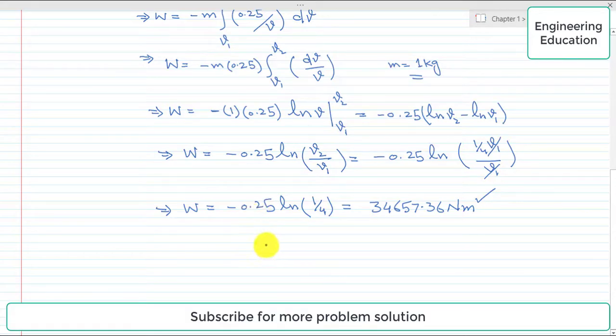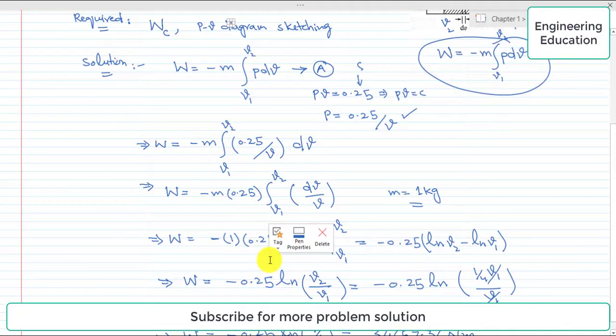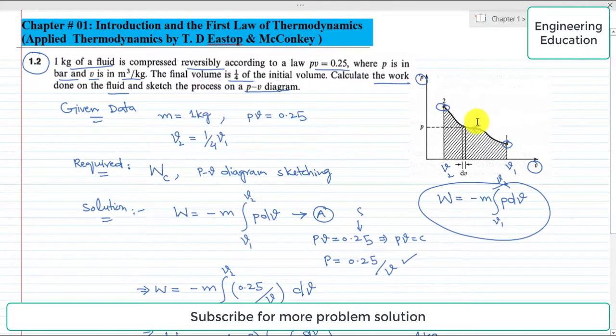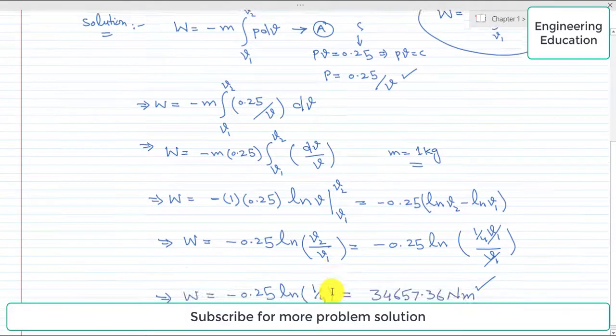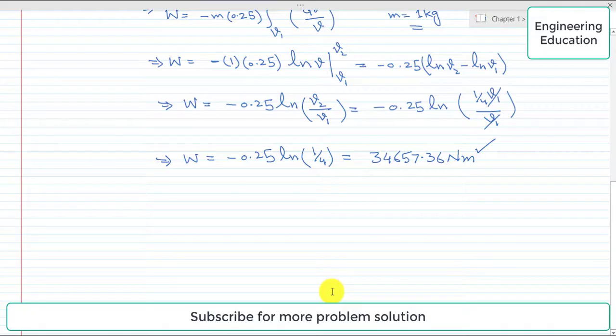We also have to draw the process, which is the compression process, on a PV diagram. For that we know about state 1 and state 2. This is the general diagram. Specifically, we can draw the diagram for this problem as well. The PV diagram for this problem: on the y-axis we have pressure and on the x-axis we have specific volume. This is P and this is V.